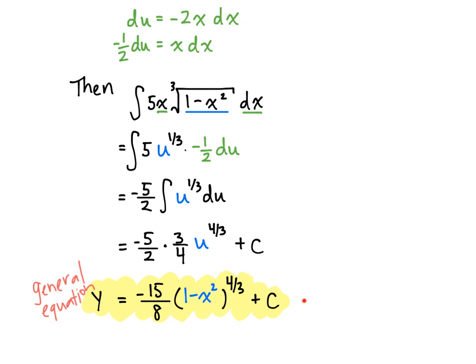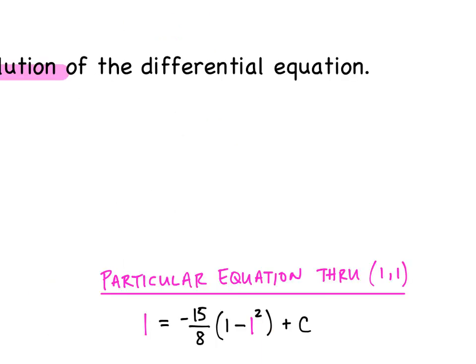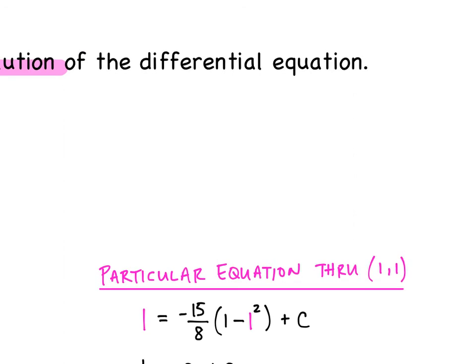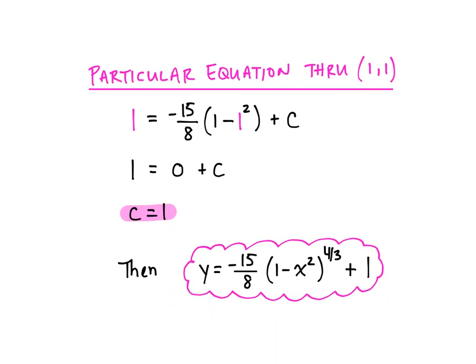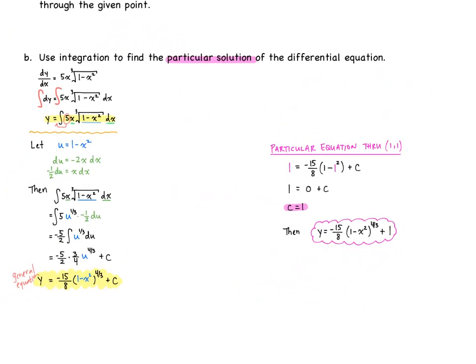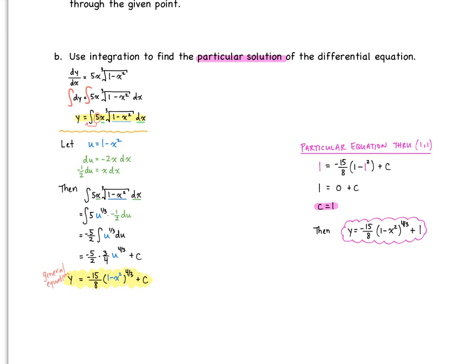Now it's time to find the particular solution. To get the particular equation, we use the original point (1, 1) from the slope field. We plug in x equals 1 and y equals 1 into our general equation to solve for c. Going through the calculations, we should get c equal to 1. Substituting back into the general equation, we get y equal to negative fifteen eighths times the quantity 1 minus x squared to the four thirds plus 1. If you have any questions on u-substitutions, make sure you come to class with those next time.